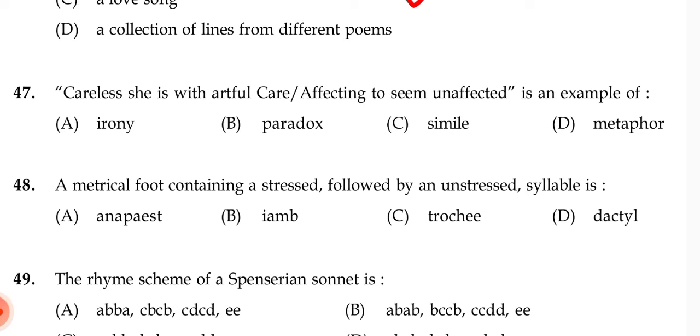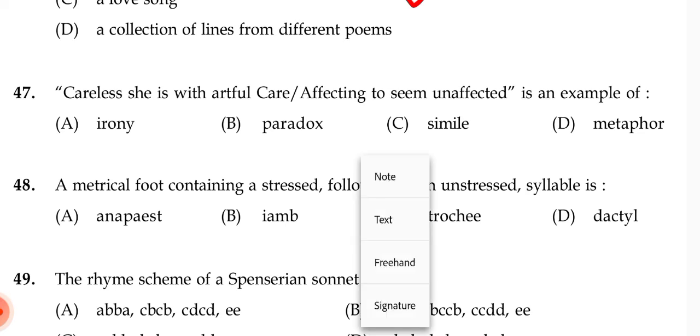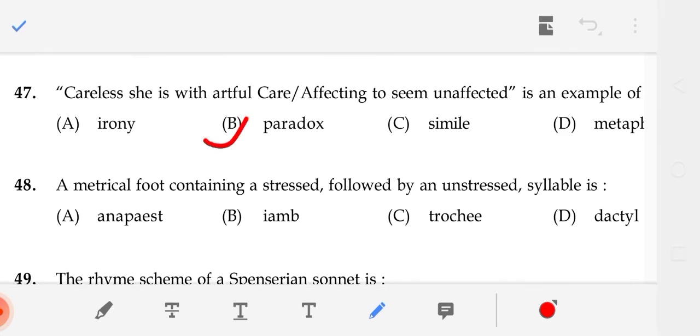Question 47: 'Careless she is with artful care, affecting to seem unaffected' is an example of what? It is an example of B — paradox. If you don't know what paradox is, please go through it.